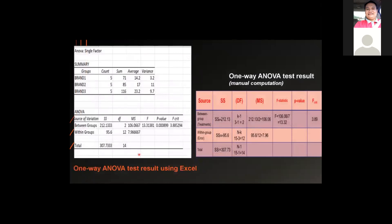This is the one-way ANOVA test result using Microsoft Excel, and this is the one-way ANOVA test result for the manual computation.